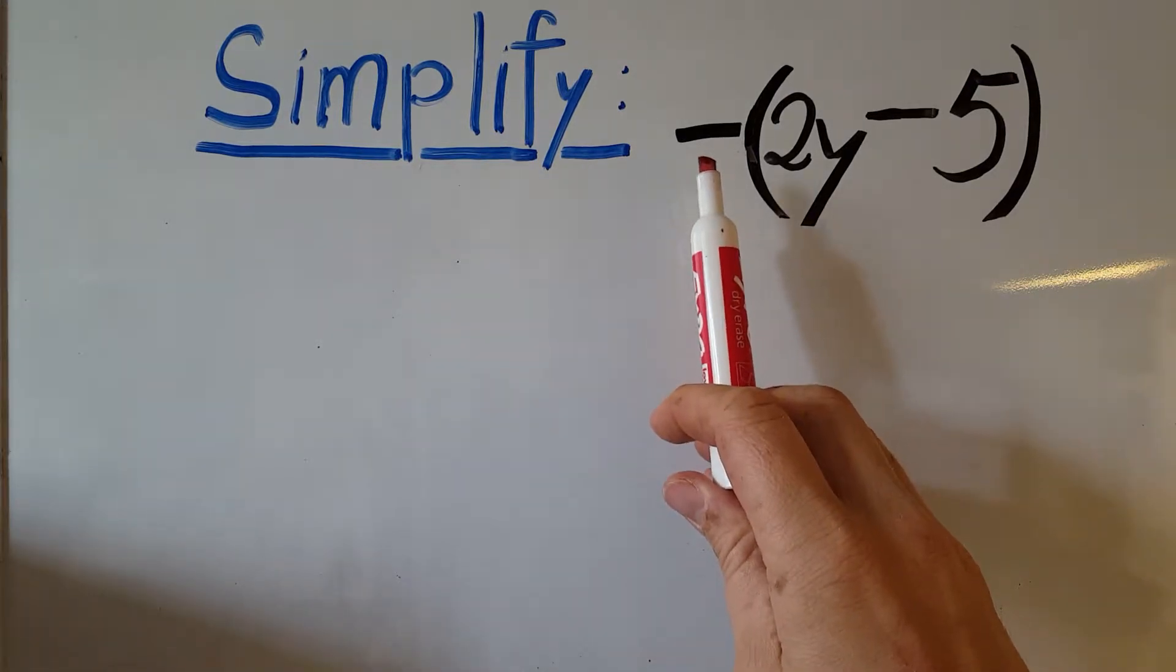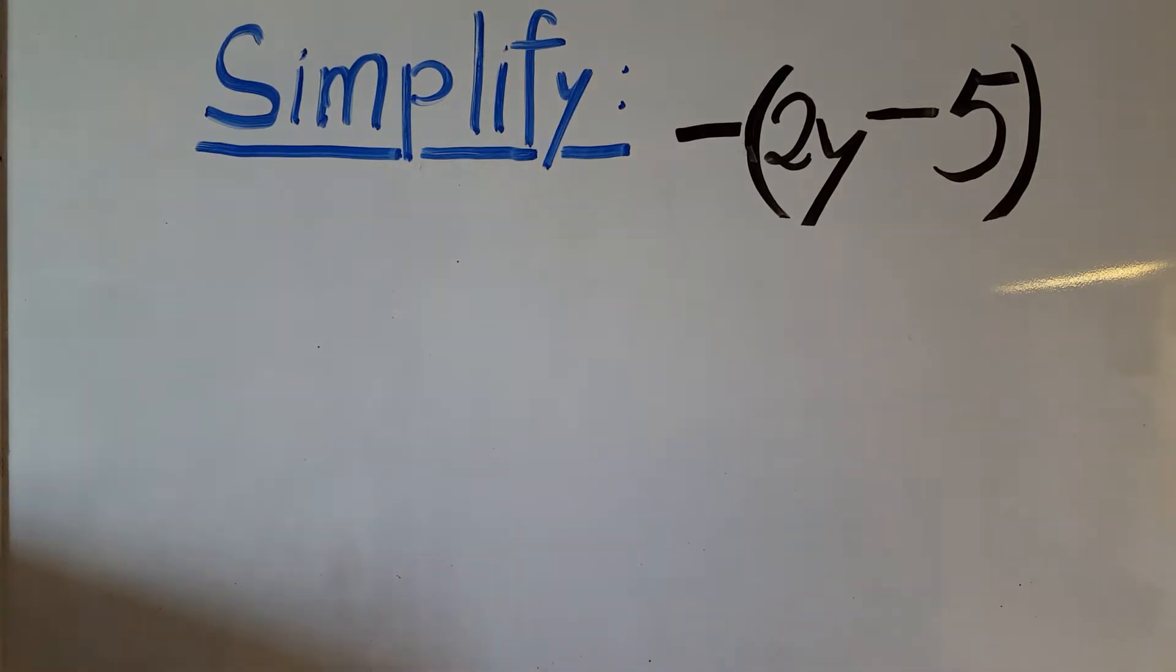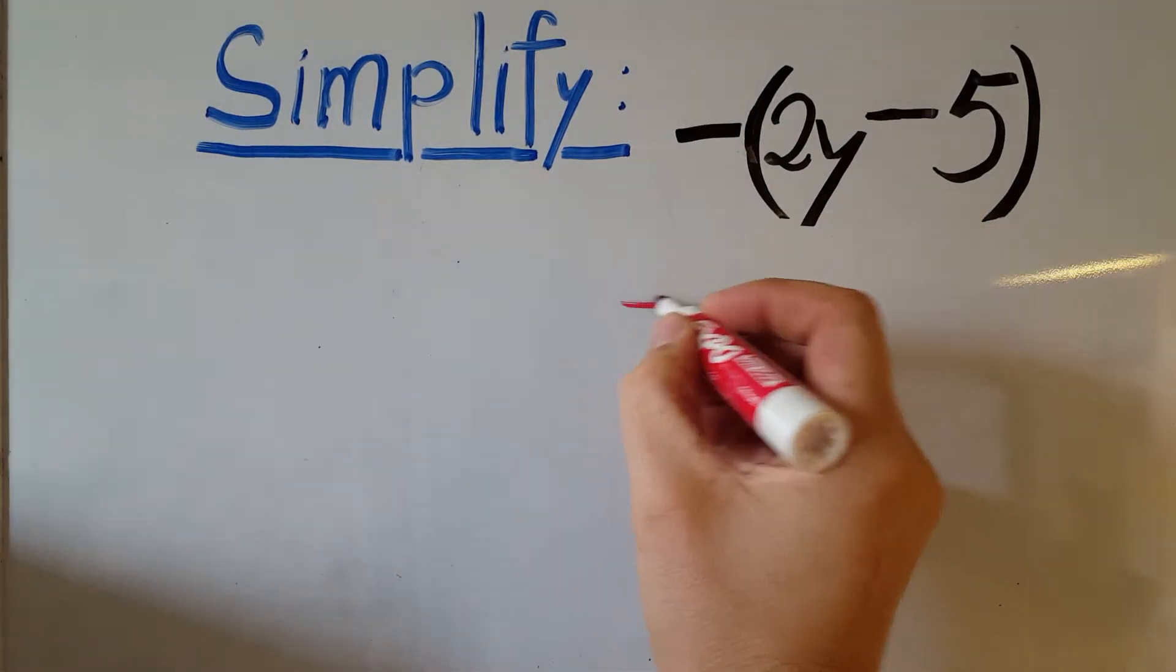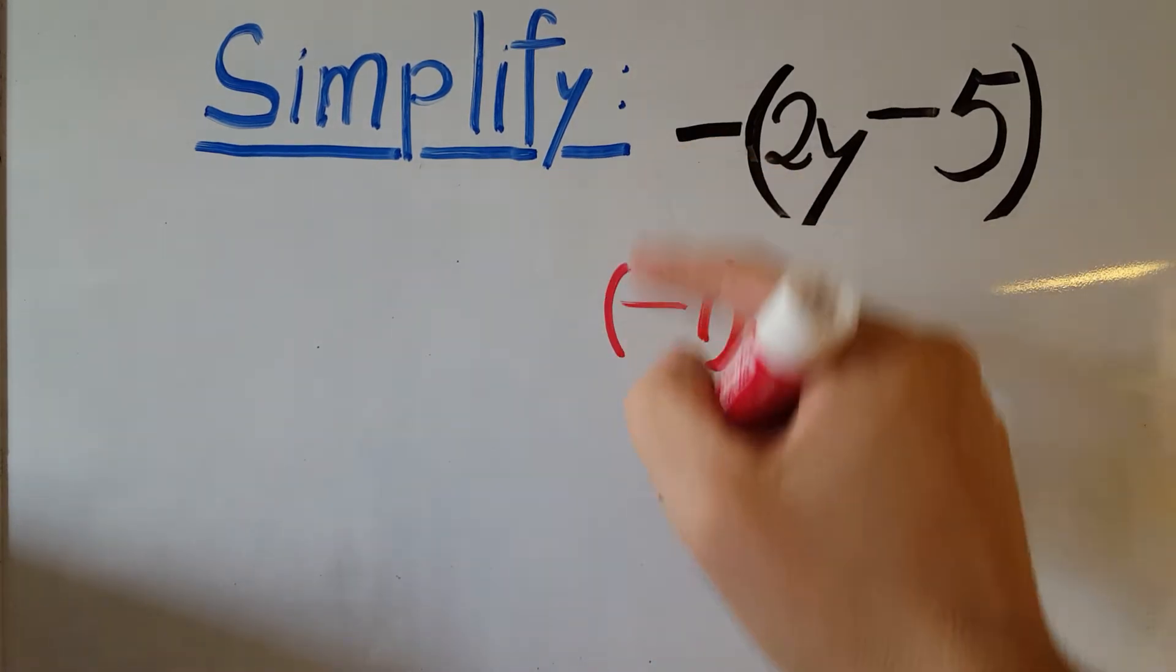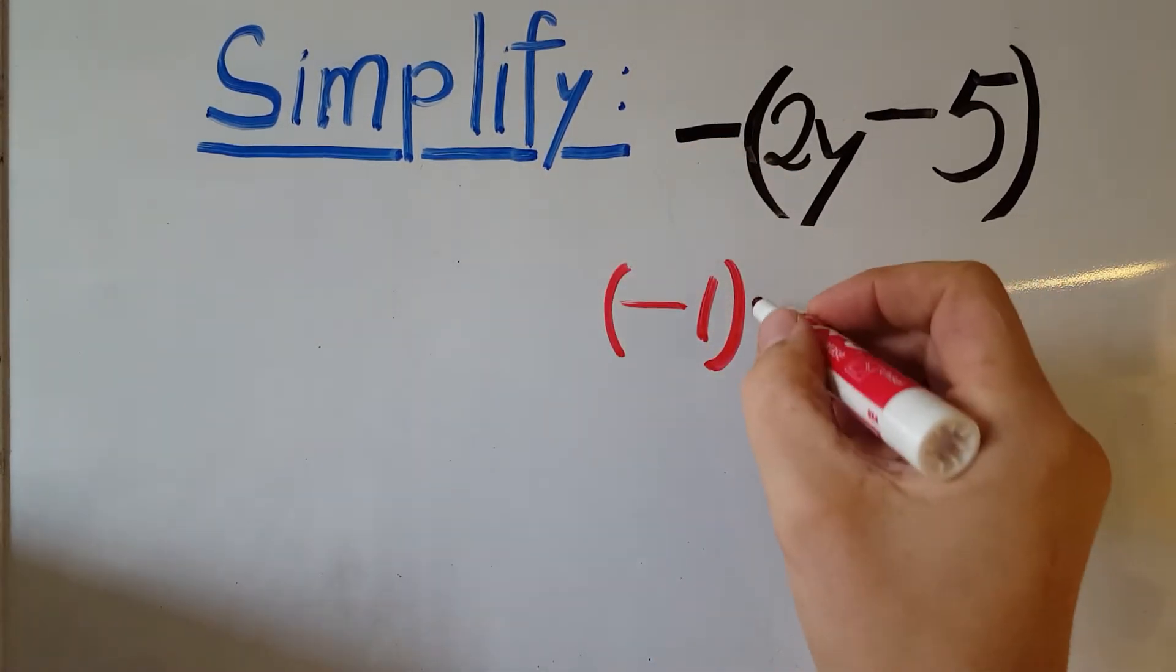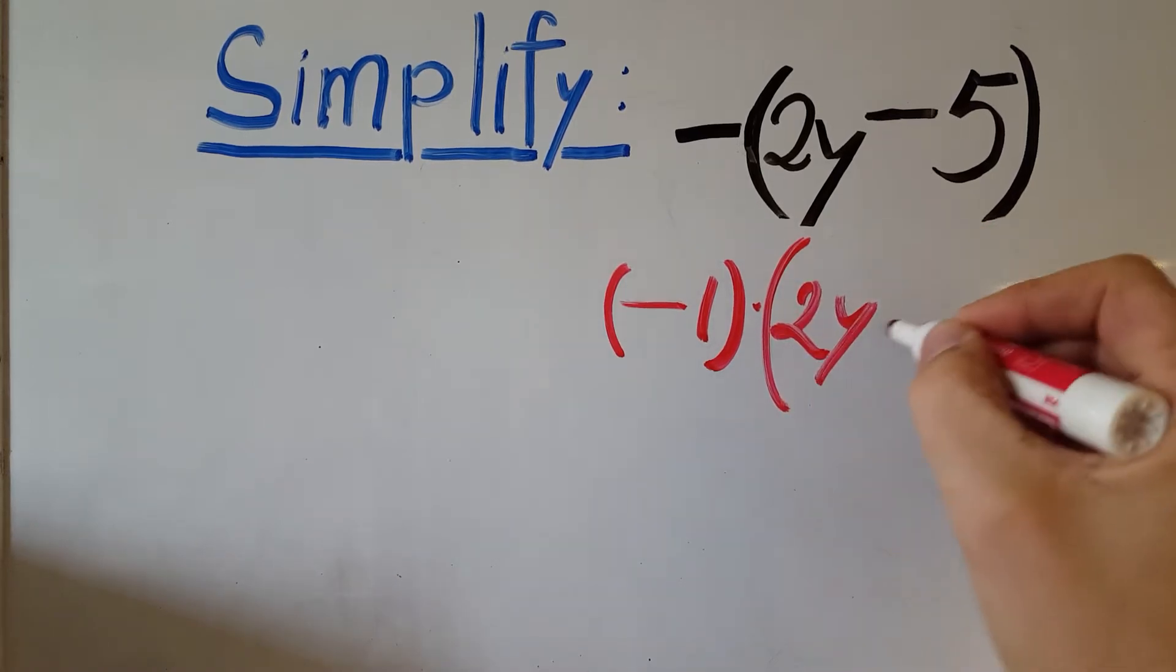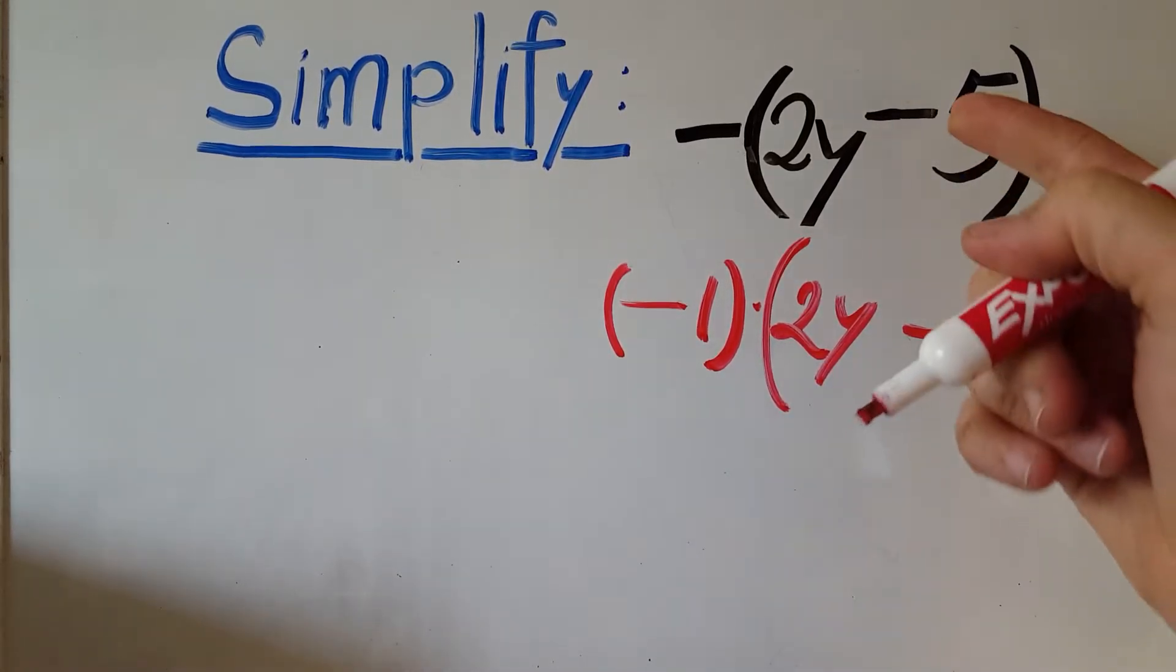And we can rewrite this to help us imagine better what we're doing. This negative is the same thing as negative one times our parentheses, the same way that it is there. We didn't change nothing.